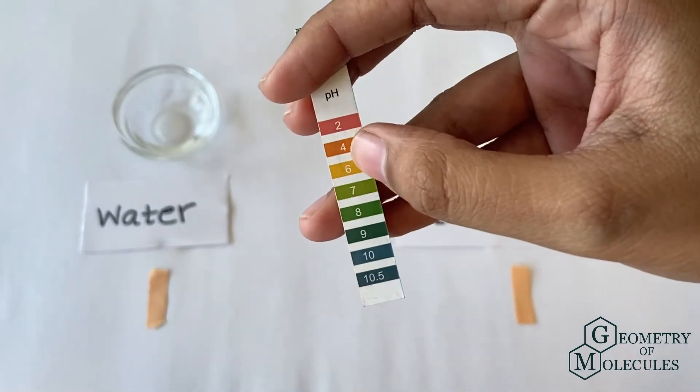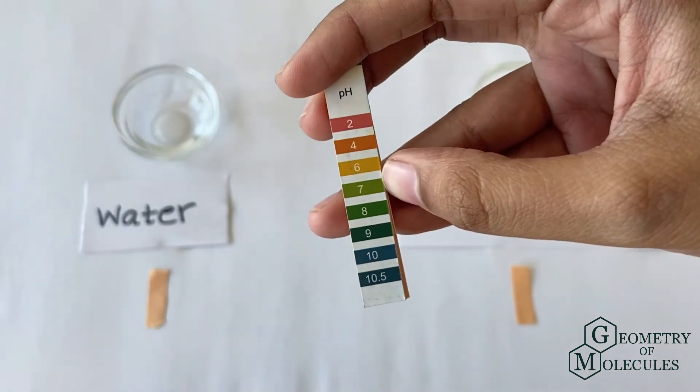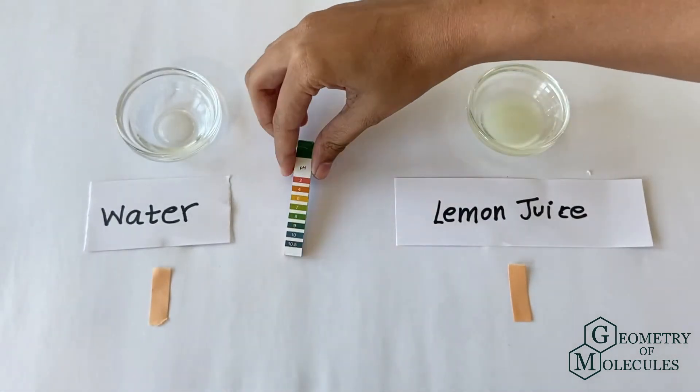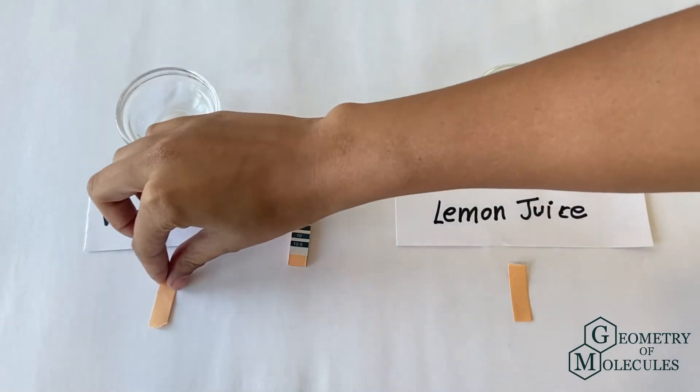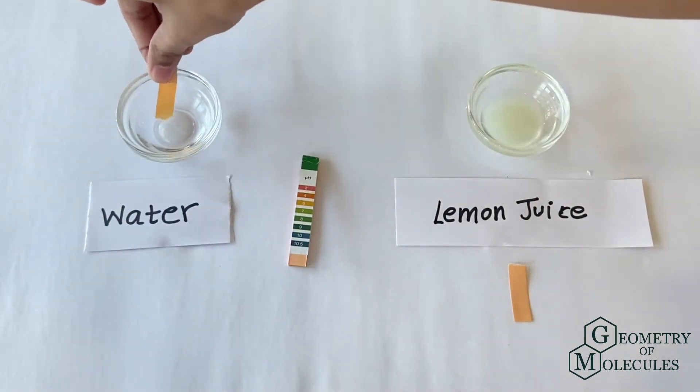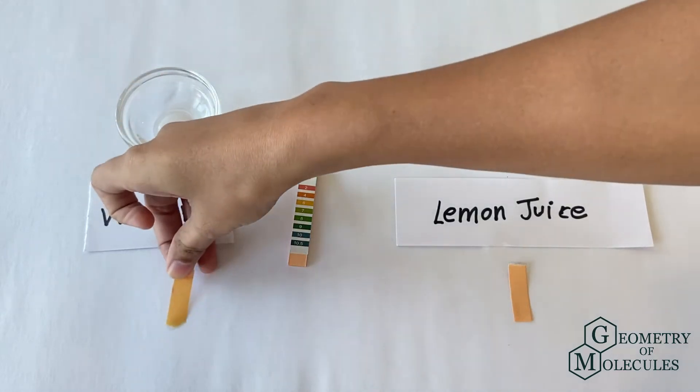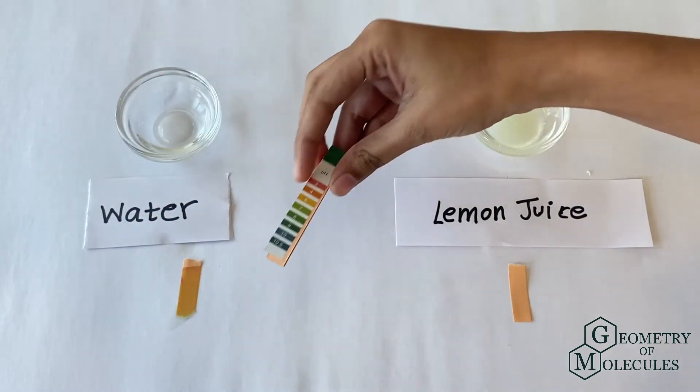If you get the value of 7, that means that our substance is neutral. Now let us test that by dipping our pH strip in water. We know that water is neutral, and as shown in this guide, the pH strip should change its color to light green.